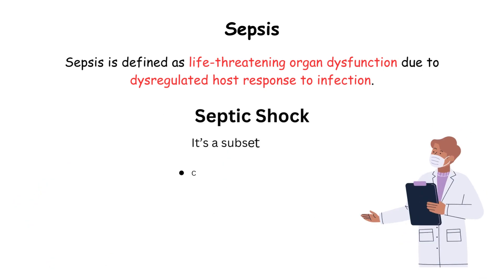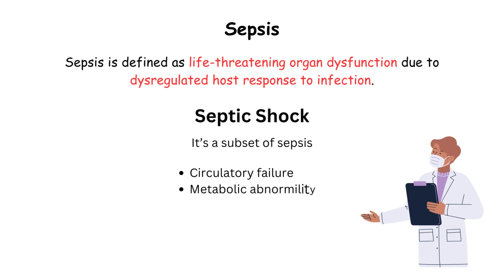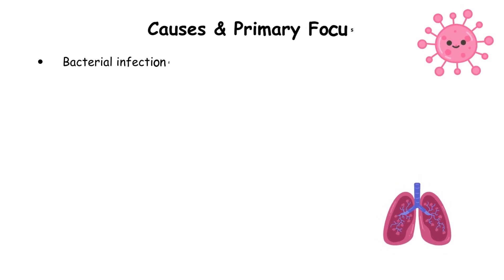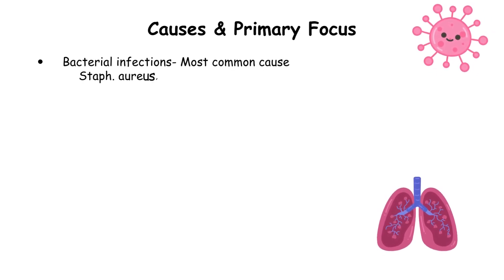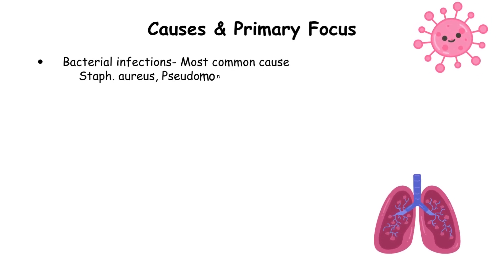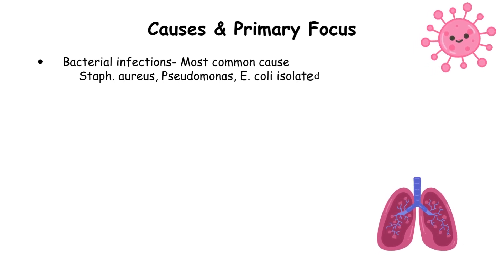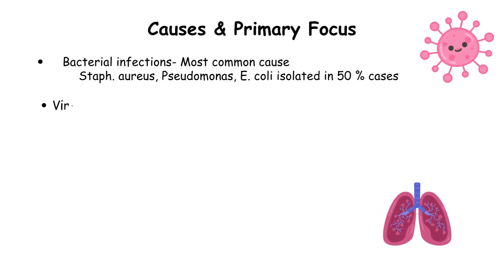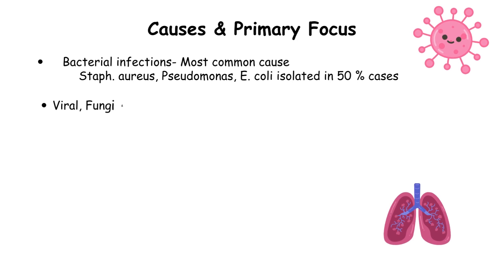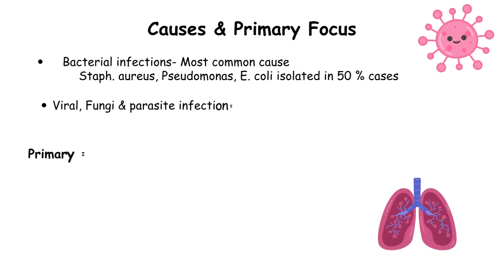Septic shock is a subset of sepsis. It is characterized by circulatory failure and metabolic abnormalities. In most cases, bacterial infection is the most common cause. Staph aureus, Pseudomonas, and E. coli are isolated in 50% of cases. Viral, fungal, and parasitic infections are the other possible causes of sepsis.